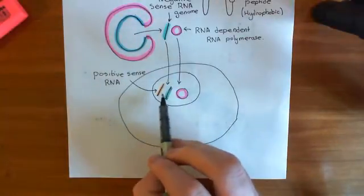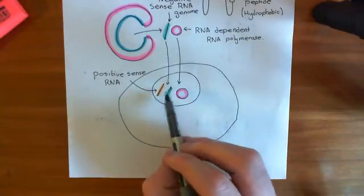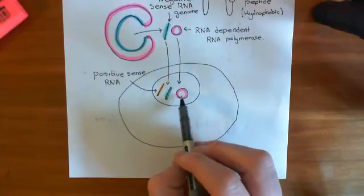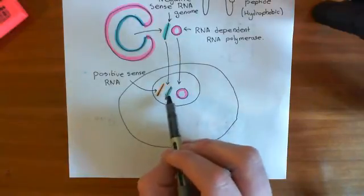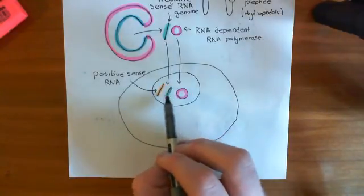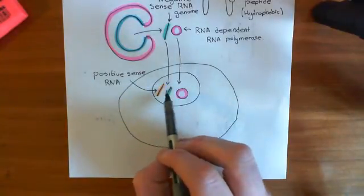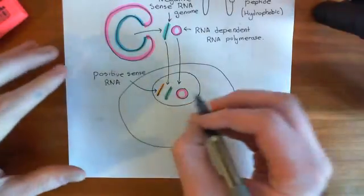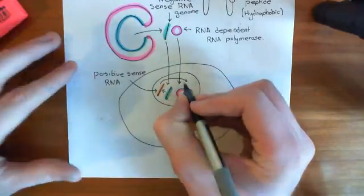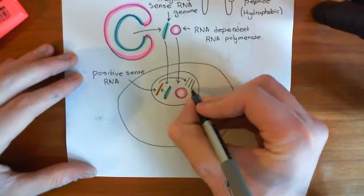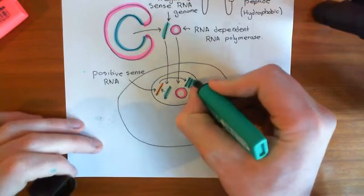We're going to use the positive sense RNA to do two things. Firstly, we're going to copy the positive sense RNA with the RNA-dependent RNA polymerase, and what we'll get is more of the negative sense RNA. That's how we're going to replicate our genome — we'll make the positive sense RNA from the negative sense, then we'll copy the positive sense back to get more negative sense. So here are loads of copies of our negative sense RNA — we've copied our genome.